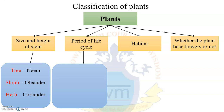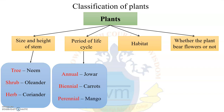According to the period of life cycle — that means how long the plant lives — it can be further classified as: annual, example jawar; biannual, example carrots; and perennial, example mango.